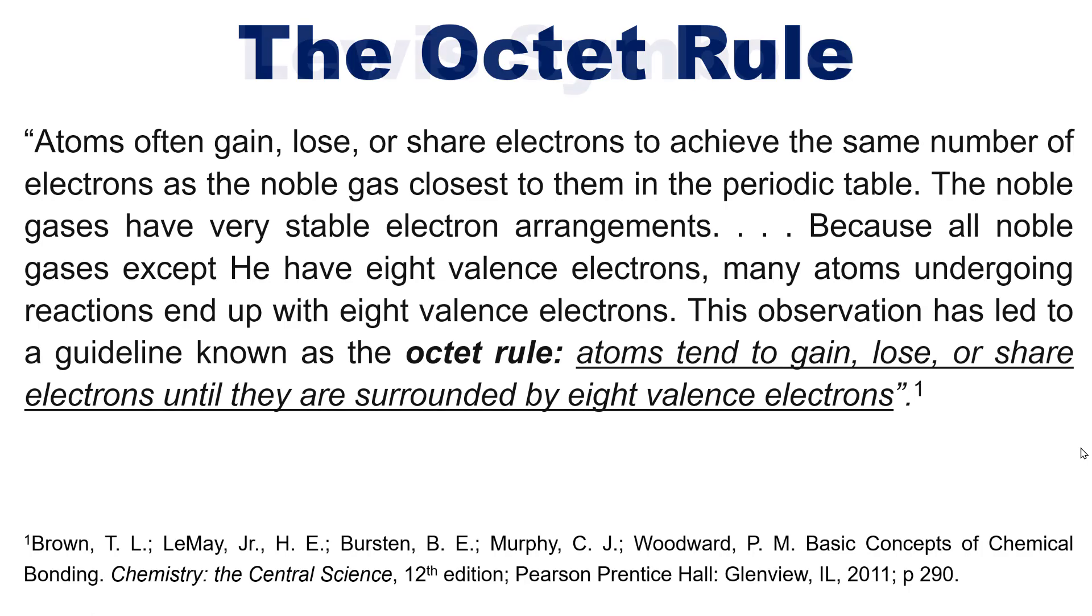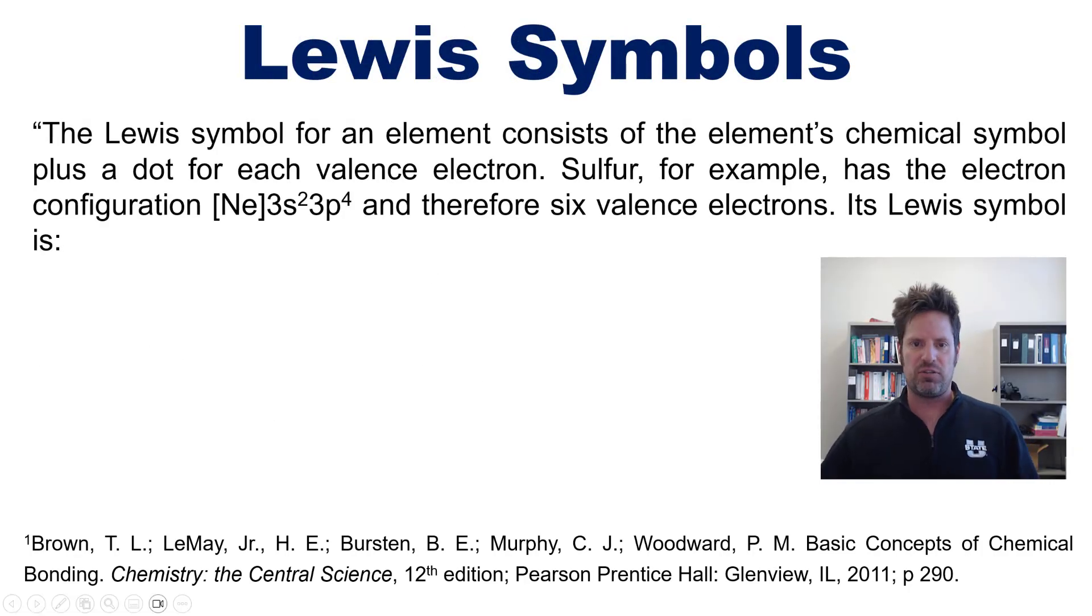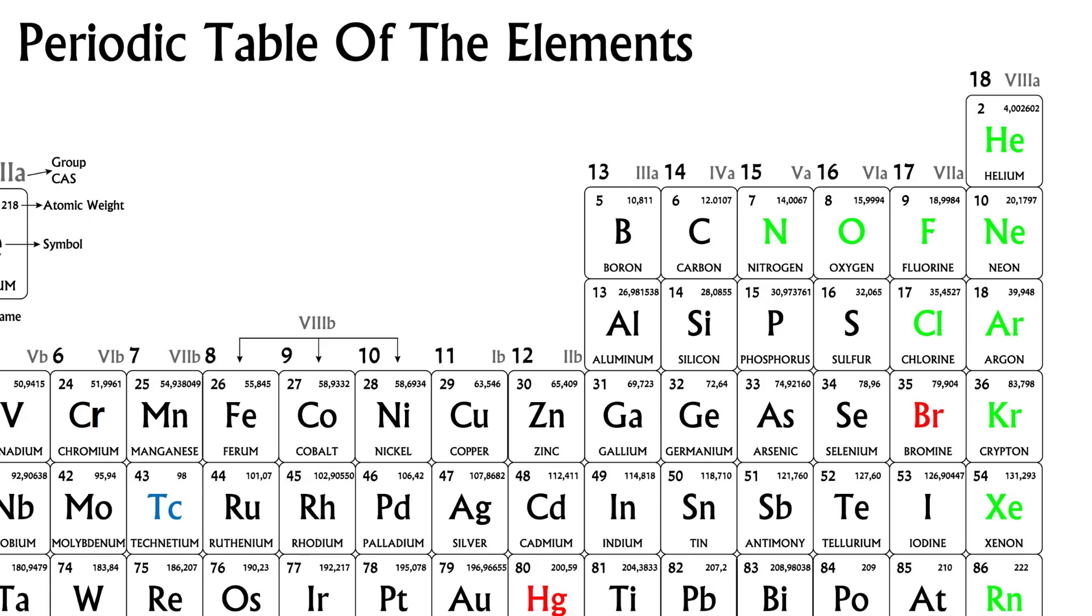So how do we draw Lewis symbols and what are they? Well, the Lewis symbol for an element consists of the element's chemical symbol plus a dot for each valence electron. Sulfur, for example, has the electron configuration shown right here and therefore has six valence electrons. Now you know it's six because the superscripts here, two and four, which represent electrons in the outermost 3s and 3p orbitals of sulfur add up to equal six. Another giveaway for that, by the way, is the fact that sulfur is located in column 6a of the periodic table. 6a means six valence electrons. Makes sense?